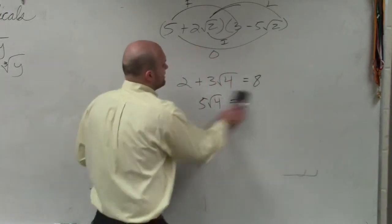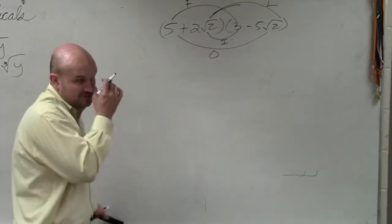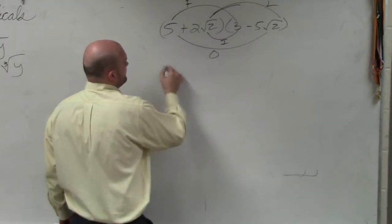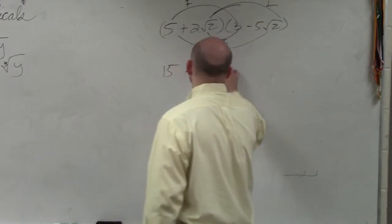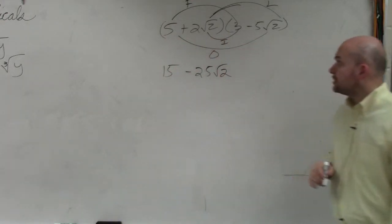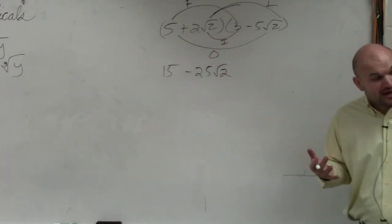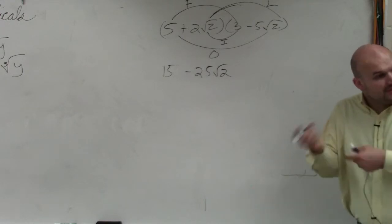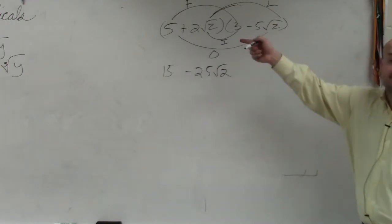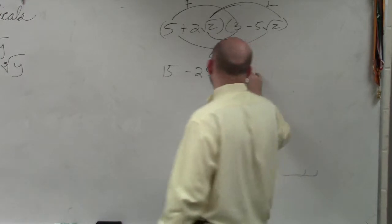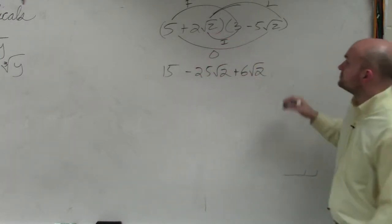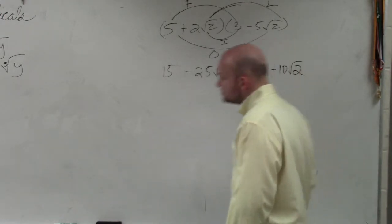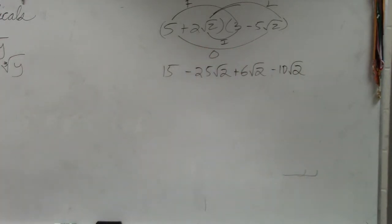So what we need to do, though, is apply FOIL. So if I multiply my first terms, I have 5 times 3, which is 15. My outer terms, I have 5 times negative 5 square root of 2, which would be a negative 5 square root of 2. My inner terms are going to be 3. Now remember, you can multiply, though. You can't add them, but you can multiply the numbers. 3 times 2 square root of 2 is going to give you positive 6 square root of 2. And 2 square root of 2 times negative 5 square root of 2 is a negative 10 square root of 2. Does anybody have any questions on what I just did?